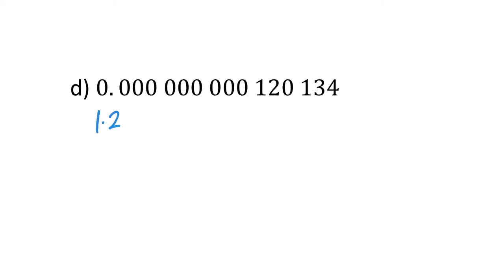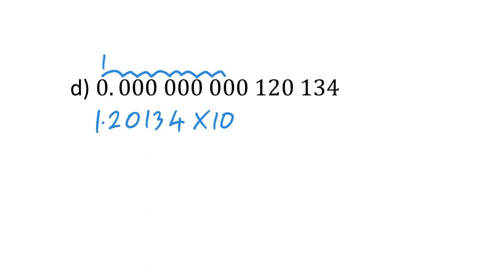For the next small number, we make it a number between 1 and 10, so it's 1.20134, times 10 to the power of... Put your 1 here in the units column and it needs to move back once, twice, 3, 4, 5, 6, 7, 8, 9, 10 times to get to here — so it's times 10 to the power of minus 10.